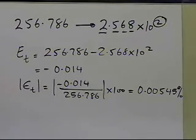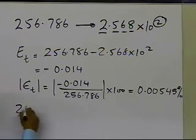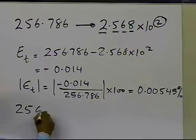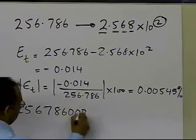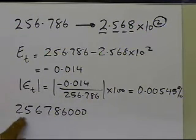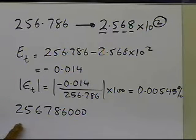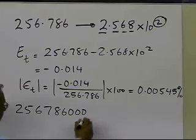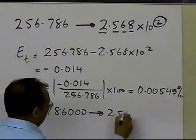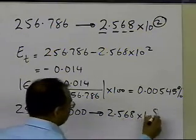Now let's take a large number — 256,786,000. This number could not be represented at all when I had the fixed register. Now with the floating-point register, this number is going to be represented as 2.568 times 10 to the power 8.